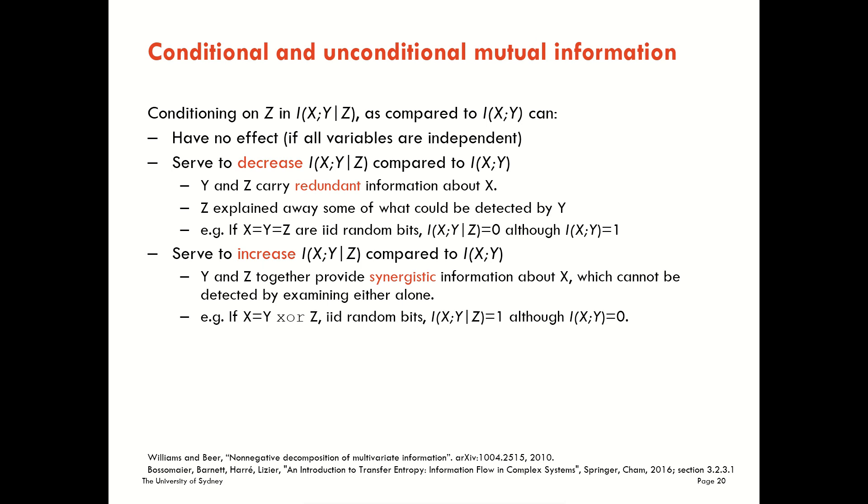Let's say that X was the result of an exclusive or between Y and Z. If we've got i.i.d. random bits, then we will have that the conditional mutual information between X and Y given Z gives us one bit, even though the pairwise mutual information between X and Y gives us zero bits.